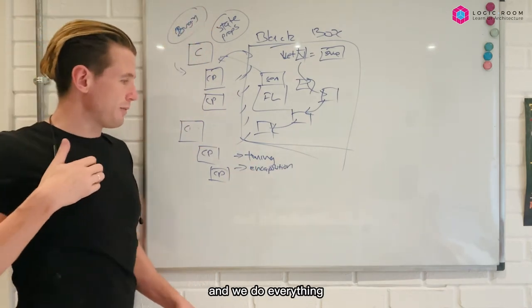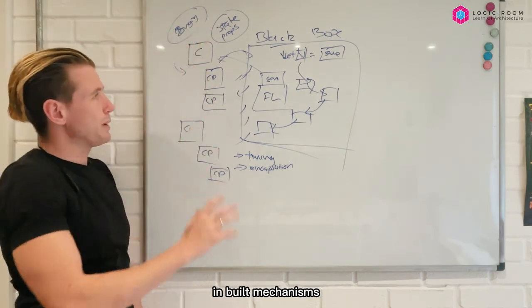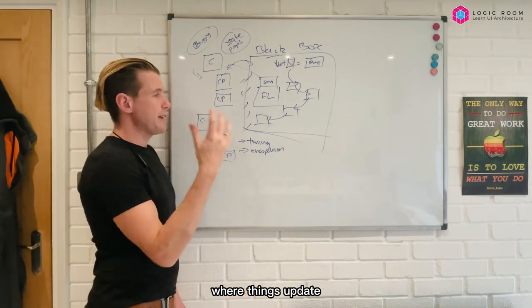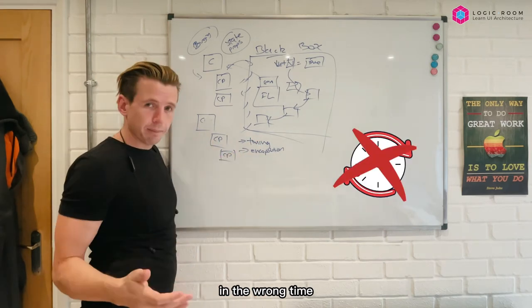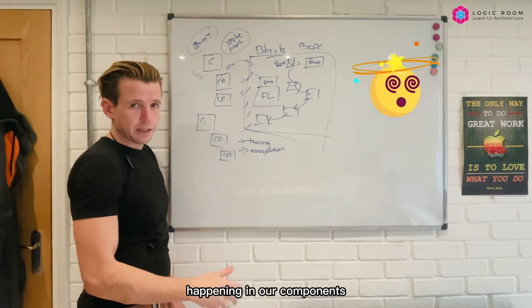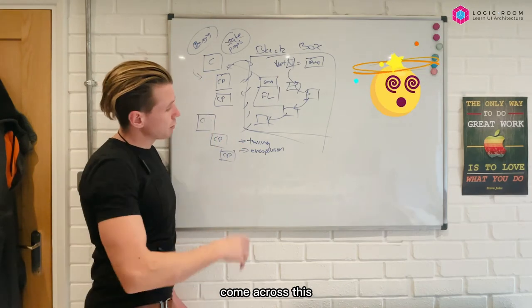And what this rule says is that often in JavaScript apps, when we follow the framework and we do everything using the framework's inbuilt mechanisms to do data updates, we can often get to the situation where things update at the wrong time. Things are going to be updated and we get these horrible side effects happening in our components, I'm sure you've come across this.